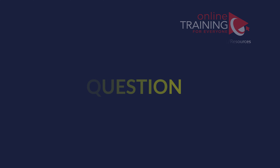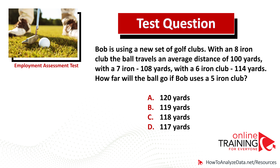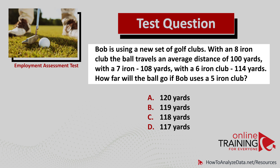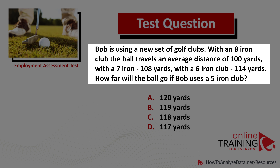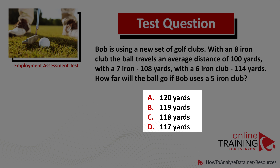Let's look at a simple question which tests your knowledge of logical reasoning and patterns. Bob is using a new set of golf clubs. With an 8-iron club, the ball travels an average distance of 100 yards. With a 7-iron, 108 yards. With a 6-iron club, 114 yards. How far will the ball go if Bob uses a 5-iron club? You have 4 choices: 120 yards, 119, 118, or 117.